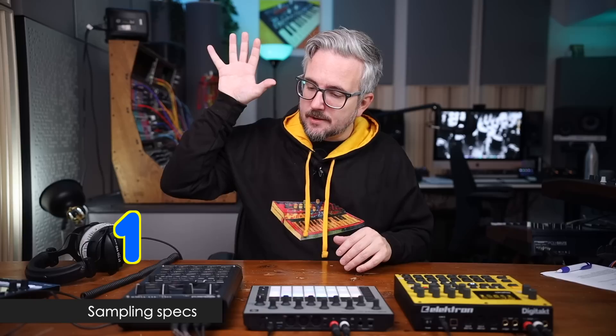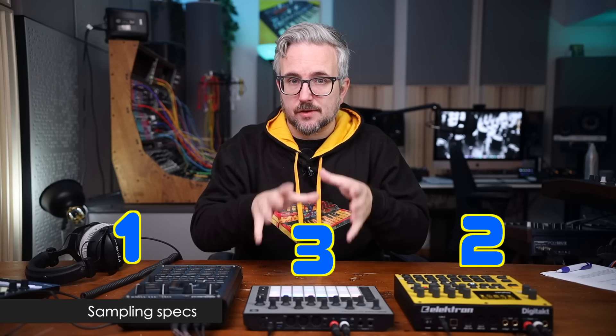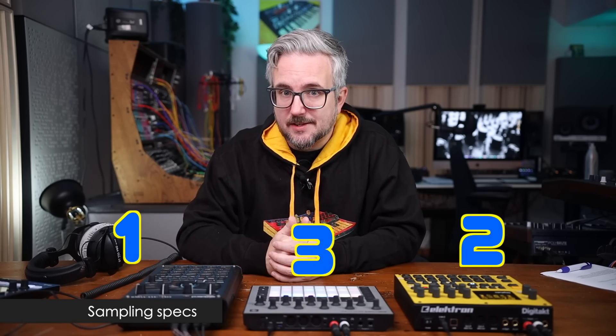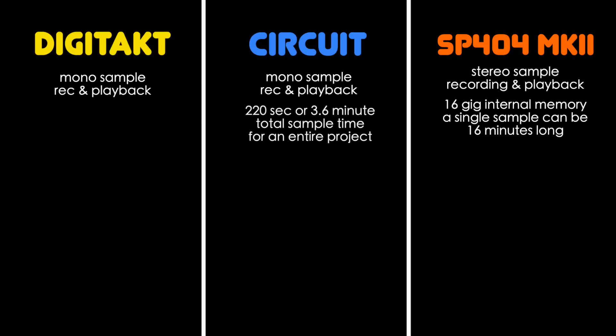First, let's talk about raw sampling specifications. I've ranked the devices as follows: number one is the SP-404 Mark II, second place the Digitakt, and third place the Circuit Rhythm. The Digitakt and Circuit Rhythm sample mono only, while the SP-404 Mark II samples both stereo and mono and has several input effects you can apply directly when recording. The SP has 16 gigs of internal memory and one sample can be 16 minutes long. The Circuit Rhythm has a max sample length of 220 seconds per pack — not per sample — or 3.6 minutes in total per pack.